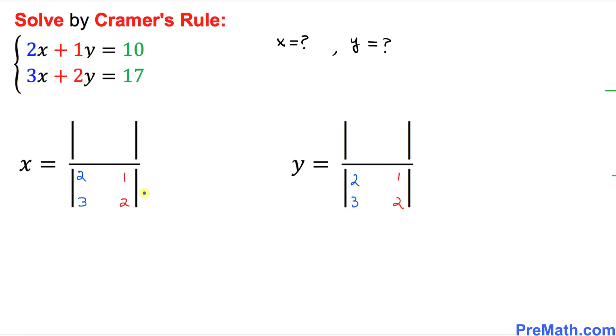So we filled out our bottom determinants. As far as our top determinants are concerned, you can see this part over here, 10 and 17. This is, for x is going to go in the first column, 10 and 17. So far, so good. And for y, we are going to shift this one to the second column. So this is going to show up 10 and 17.